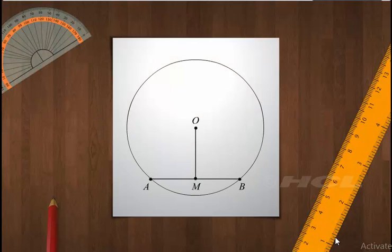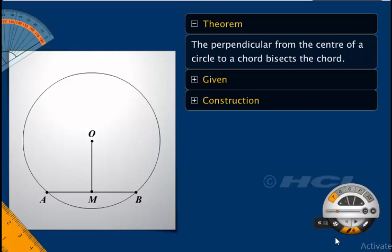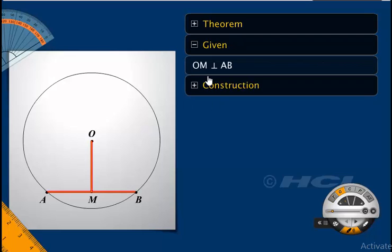We have seen in the experiment that the perpendicular from the center of the circle bisects the chord. Let's see whether we can state this result as a theorem. We will prove the theorem using the concept of congruent triangles. We are given that OM is perpendicular to AB, and we need to prove that OM bisects AB.